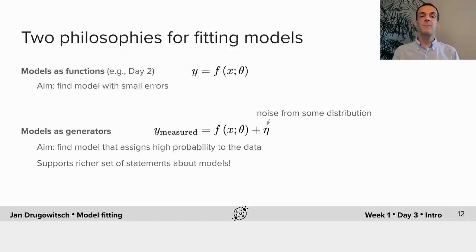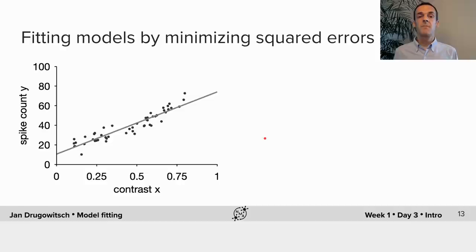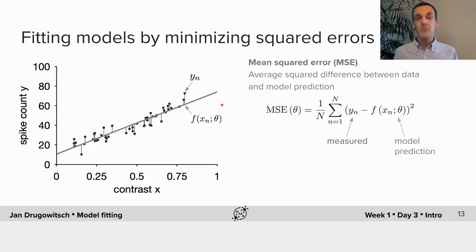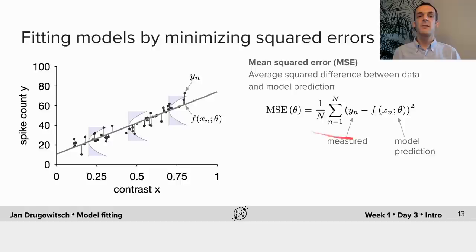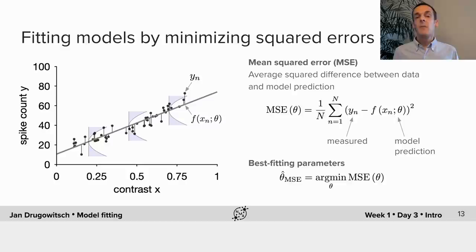Let us now start with the first philosophy of fitting models by minimizing errors, returning to the previous example of modeling the relationship between contrast and spike counts with a simple line. To find the best line we will measure the error by the mean squared error, which is probably the most popular error measure. The mean squared error is based on computing the distance for each data point to its associated model prediction, squaring this distance as shown here by the blue shaded error function, and then averaging the squared distance across all data points. We can then find the best fitting parameters as the ones that minimize the mean squared error. The mean squared error is related to the R-squared measure you used in day two.